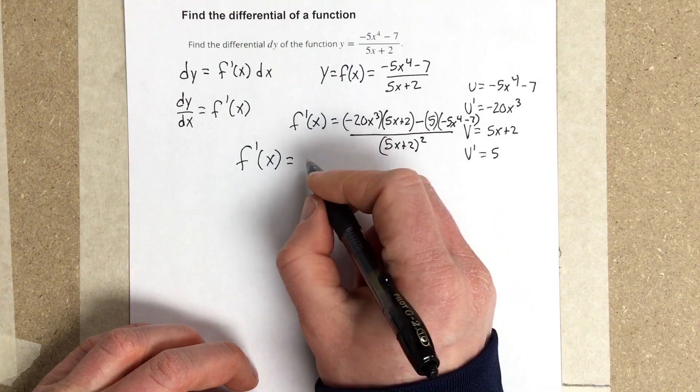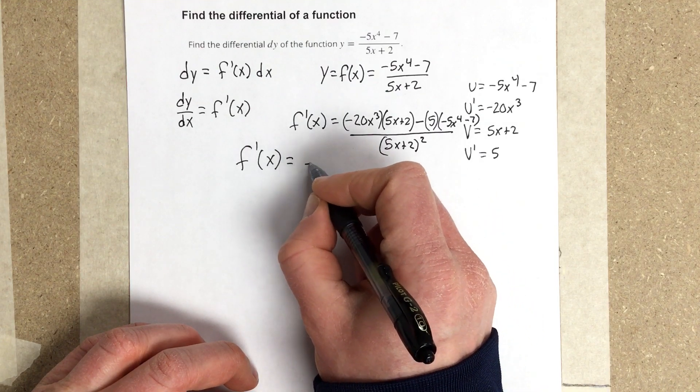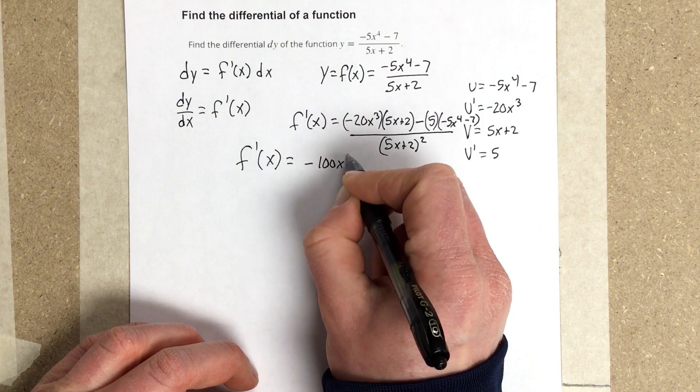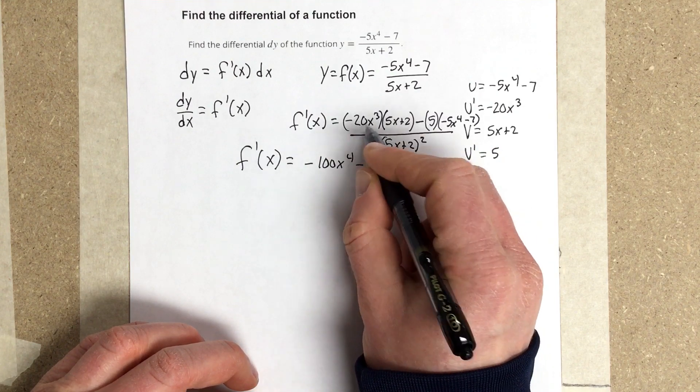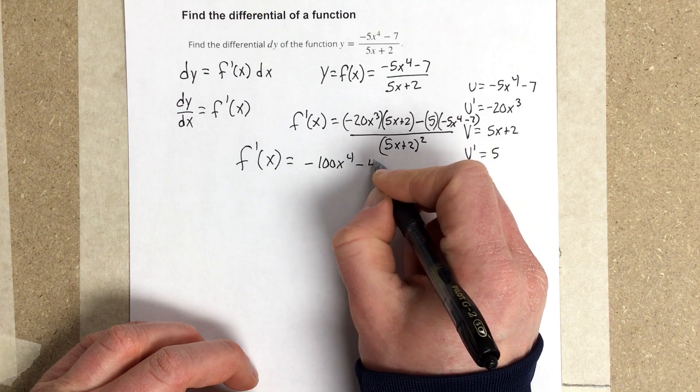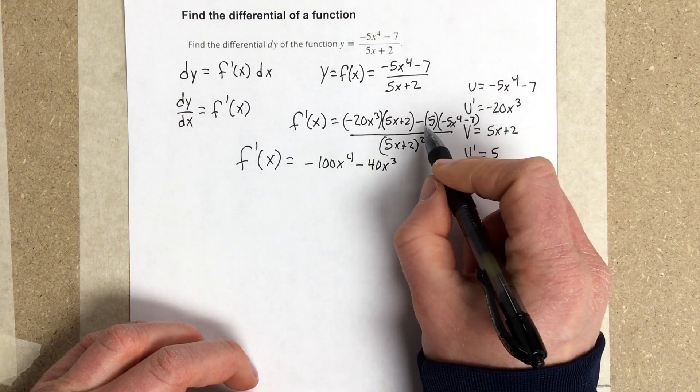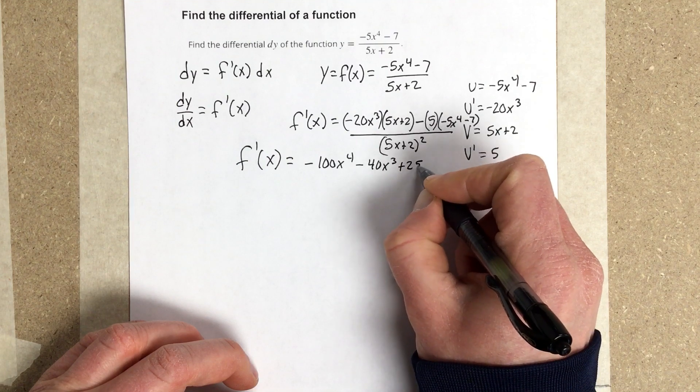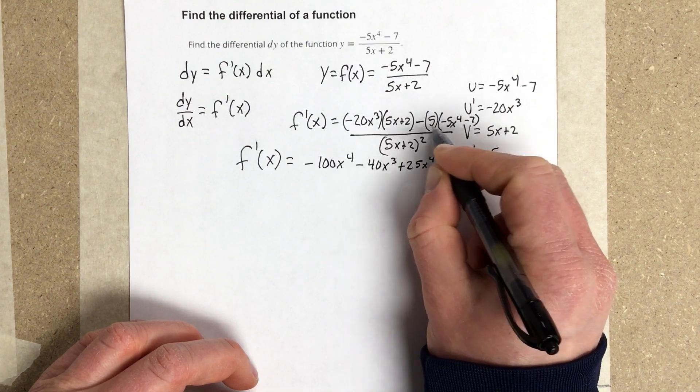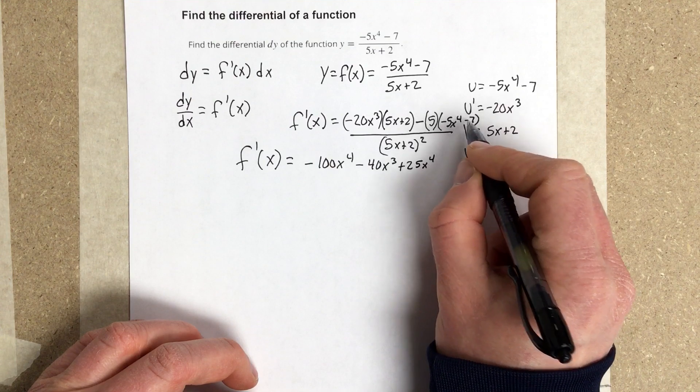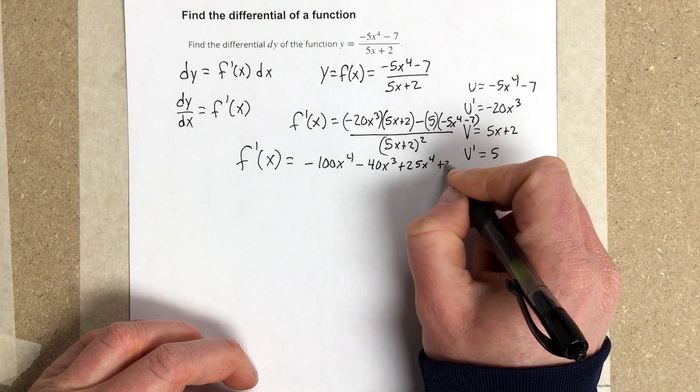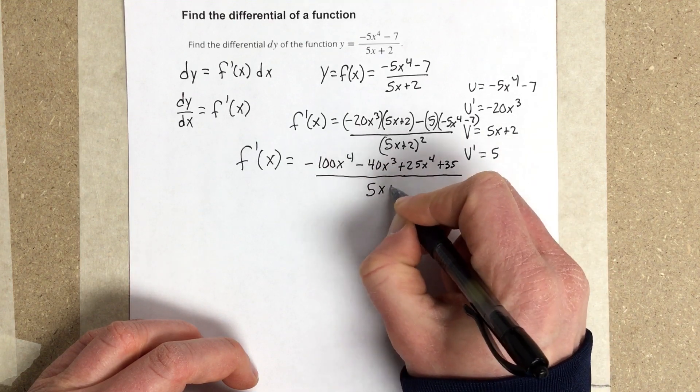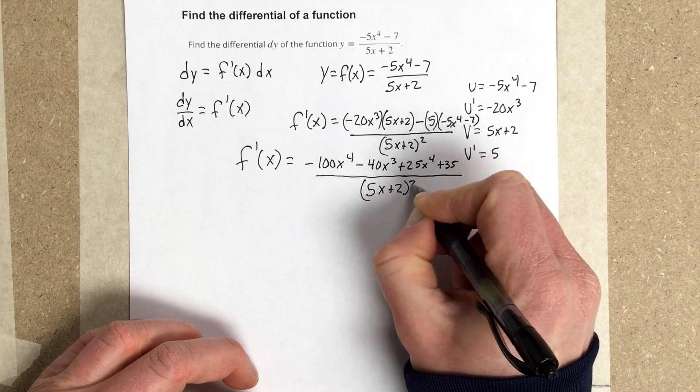So f prime of x is equal to, when I multiply the numerator, I get negative 100x to the 4th minus 40x cubed. This is positive 25x to the 4th, and then negative 5 times the negative 7 would be positive 35, all over 5x plus 2 squared.